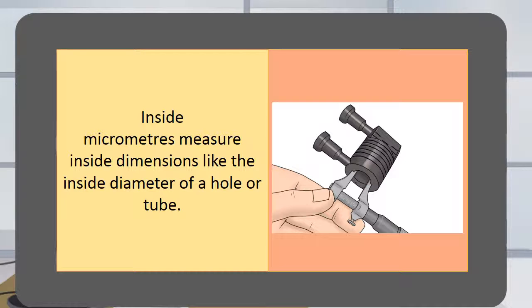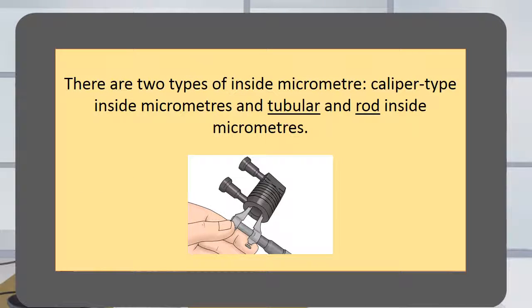Inside micrometers measure the inside dimensions like the inside diameter of a hole or a tube. There are two types of inside micrometer.